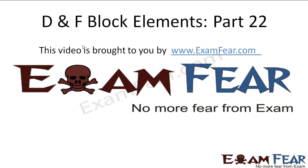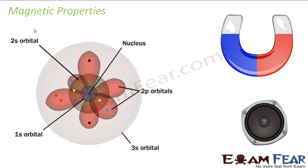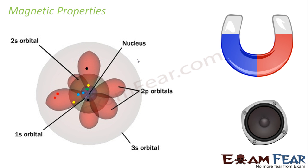Hello friends. This video on D and F Block Elements Part 22 is brought to you by examfear.com — no more fear from exam. Now let's talk about Magnetic Properties. Magnetic property is mostly because of unpaired electrons in an atom. This atom has a lot of electrons and sometimes you have unpaired electrons which create this magnetic property. Magnets are used in speakers mostly.